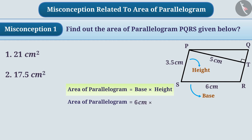This gives 6 centimeters multiplied by 3.5 centimeters, which equals 21 square centimeters. With this misconception, they incorrectly choose option 1 as the answer.